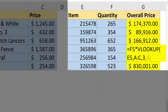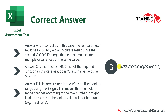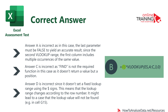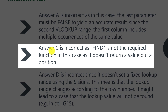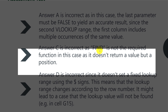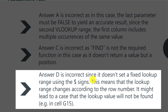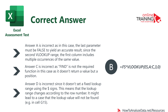The correct answer is B: F5 multiplied by VLOOKUP of E5, the range, and index 3 set to false. Answer A is incorrect because the last parameter must be false to yield an accurate result. Answer C is incorrect because FIND is not the right function to use here. Answer D is incorrect because it doesn't set a fixed lookup range using dollar signs. It was a tricky question, but you see a lot of this on intermediate and advanced Excel assessment tests.